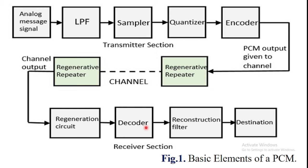After the regenerative repeater, the decoder follows. The decoder circuit decodes the pulse-coded waveform to reproduce the original signal, and this decoder circuit acts as a demodulator.